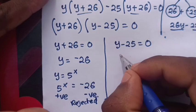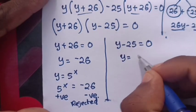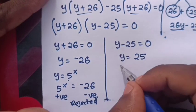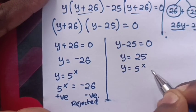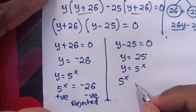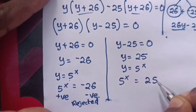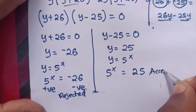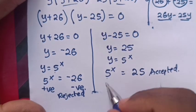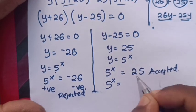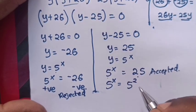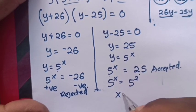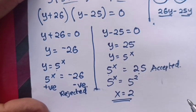So we deal with the second choice: y = 25. Recall y = 5^x, so 5^x = 25, which are both positive, so this choice is accepted. Now 25 is 5², so we compare the powers since the bases are the same. Therefore x = 2.